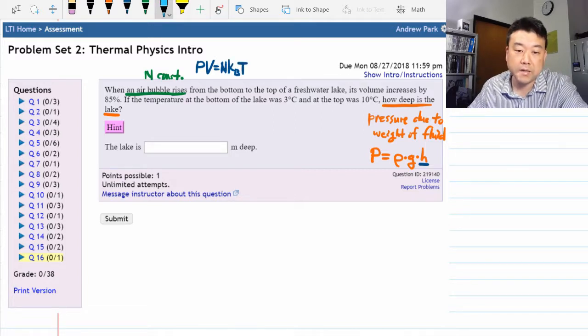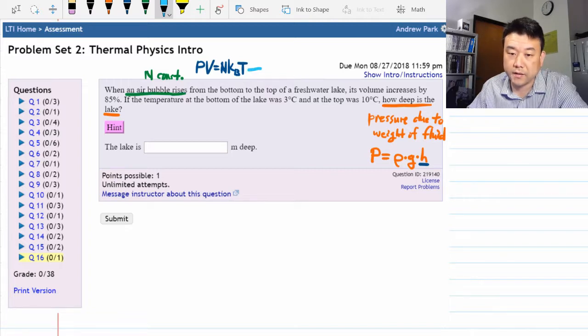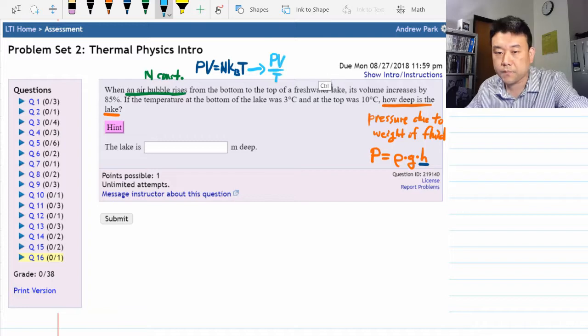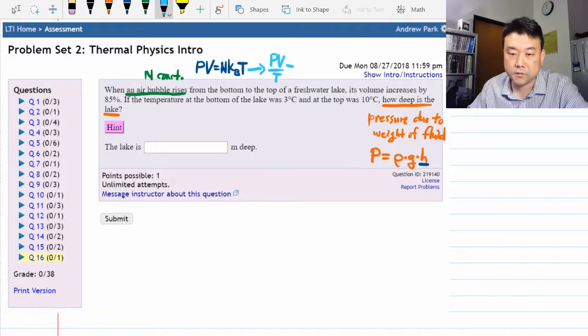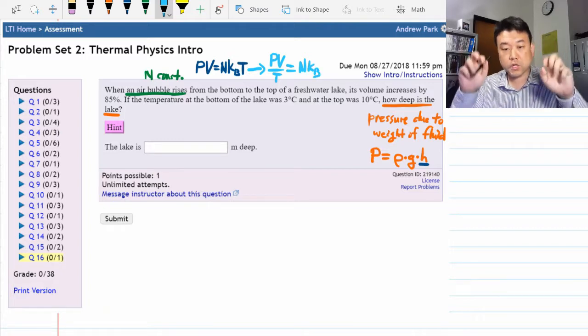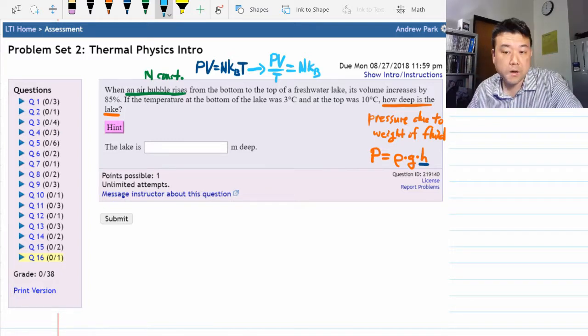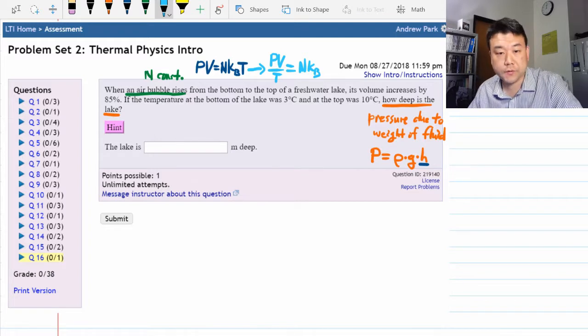And maybe because N is constant, you are already thinking ahead to putting this into this format: PV over T is equal to NK, a constant quantity, kind of a conserved quantity for this question. Maybe that will be useful.